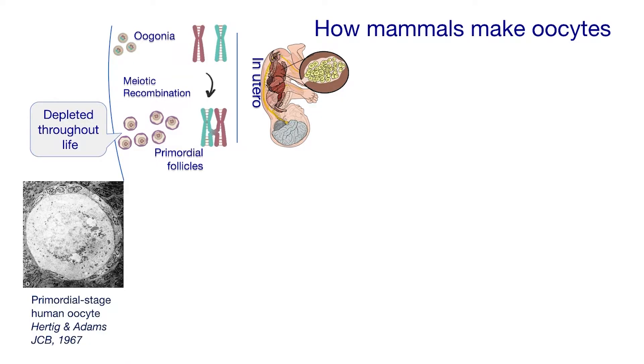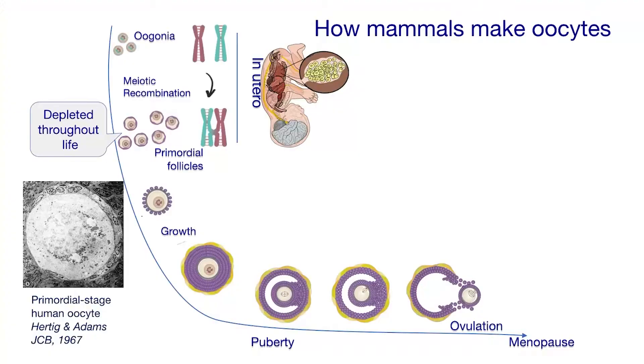That means a baby girl is born with her lifetime supply of oocytes, at least according to our current understanding. Here you can see these become depleted throughout life. Here is an electron micrograph image of what these oocytes look like. These extraordinary cells live in the ovary for decades before they're called to growth. They're recruited for growth throughout life, and between puberty and menopause they develop to a stage where they can ovulate in response to cyclical hormonal triggers. By the time this egg is ovulated, it will be as old as — and a little bit older than — the woman who ovulates it.